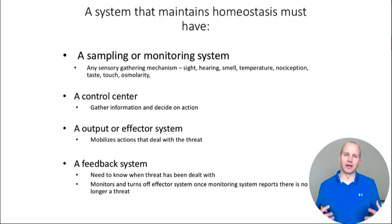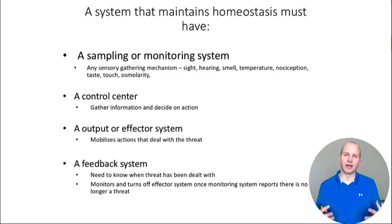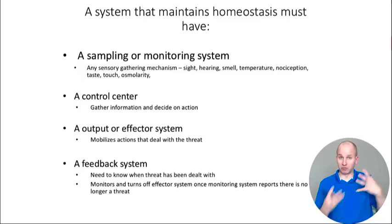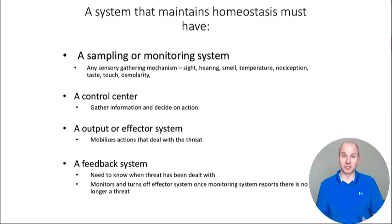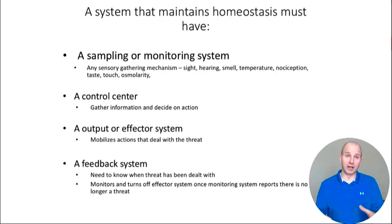These homeostatic systems have a baseline level of functions they need to accomplish. They need a sampling or monitoring system — all these nociceptive and interoceptive and exteroceptive apparatuses bringing in information from our body and environment to make some judgments on. The control center needs to gather that information — that being your brain — and output a reflector system, which is your nervous system, your endocrine system, your immune system, your motor system. Then a feedback system that should say, hey, threat's been dealt with, calm back down.